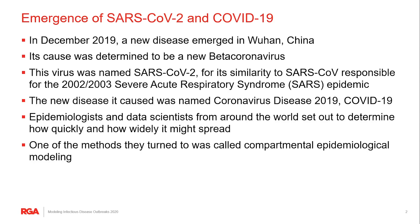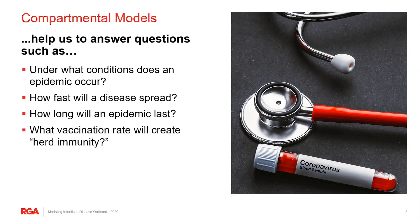Epidemiologists quickly set out to determine how quickly and how widely this new disease might spread. One of the methods that they turned to were compartmental models. Now these models have been in development since the opening decade of the 20th century, and some of the earliest work was done by a physician named Ronald Ross and a mathematician named Hilda Hudson, and together they were interested in understanding the transmission of malaria.